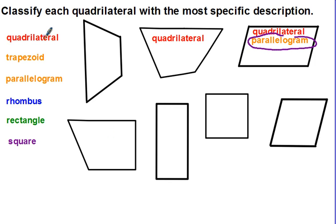This one down here, let's see, it would be a quadrilateral because it has four sides. It would be a trapezoid because it has one pair of parallel sides. So the most specific name for that would be a trapezoid.